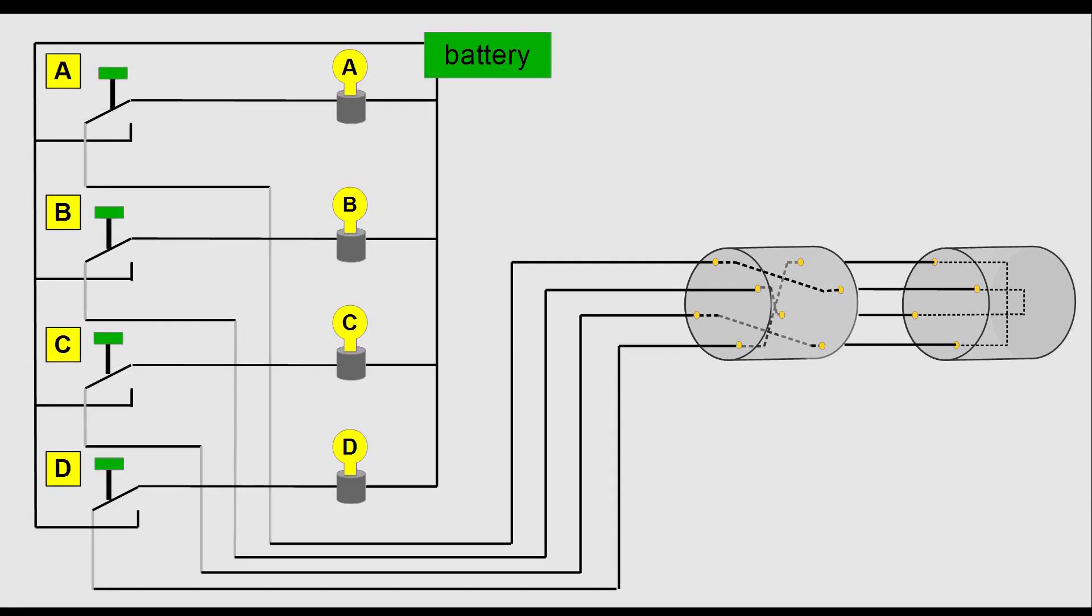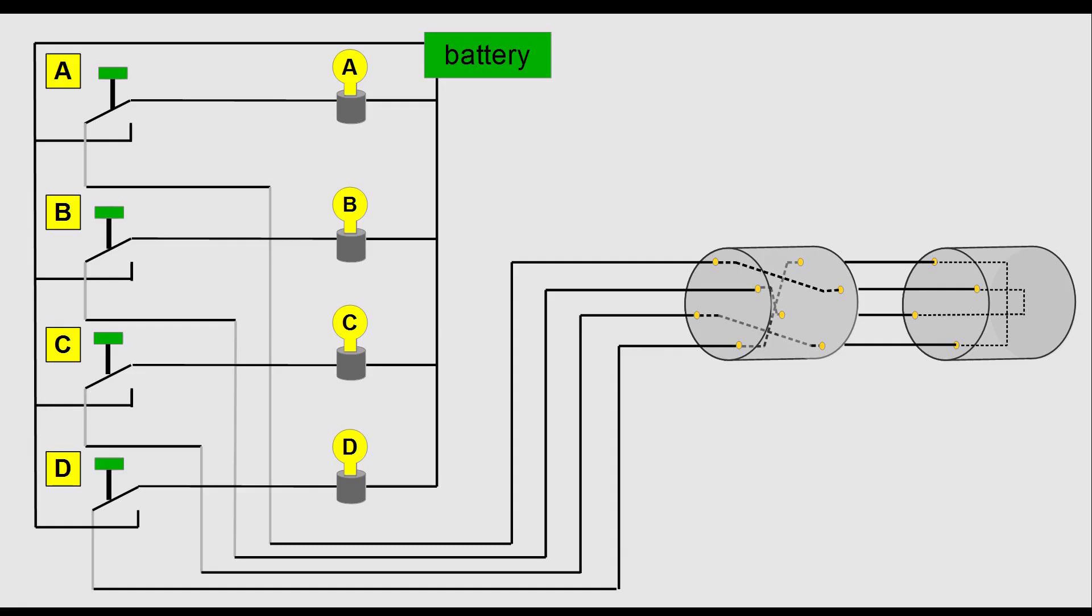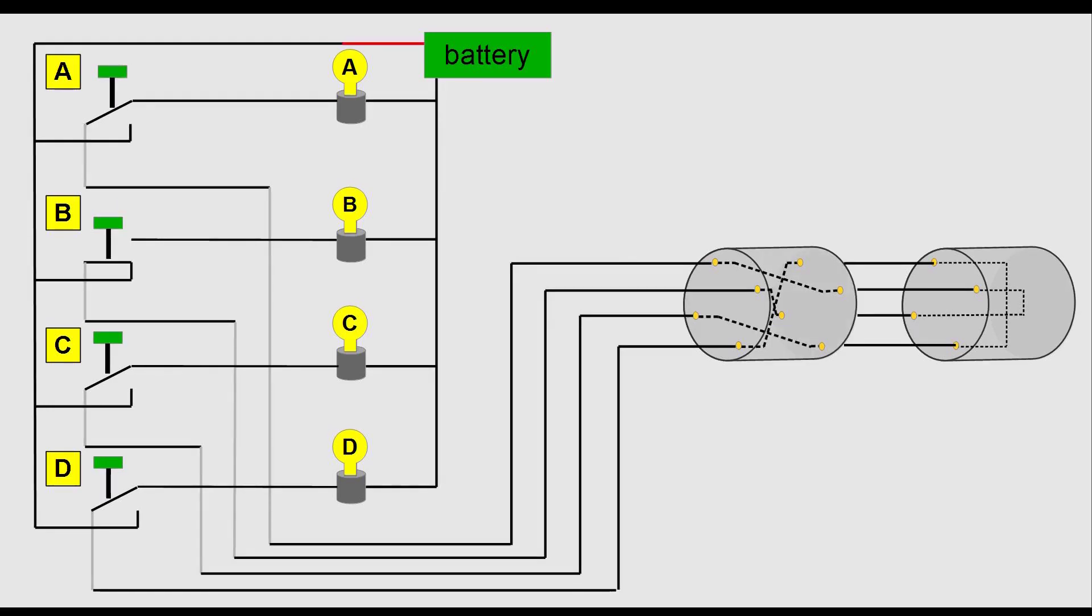For example, if you pressed A, light B would light up. If you would keep the rotors in the same position, pressing key B would now lead to light A.